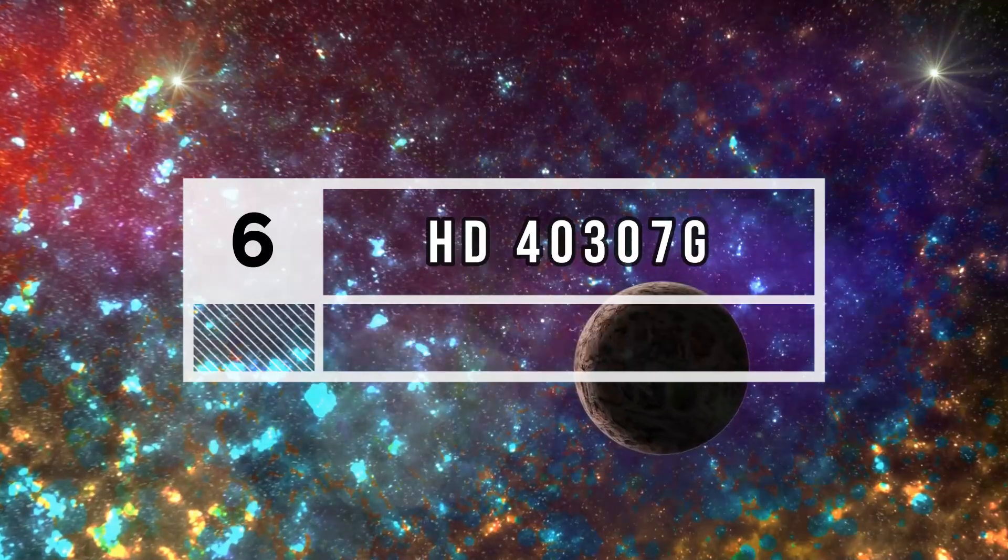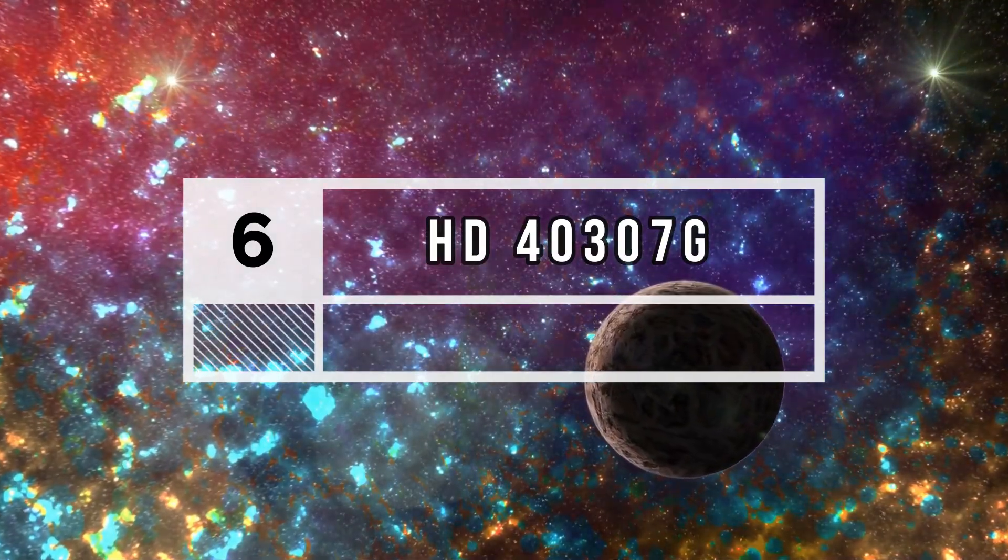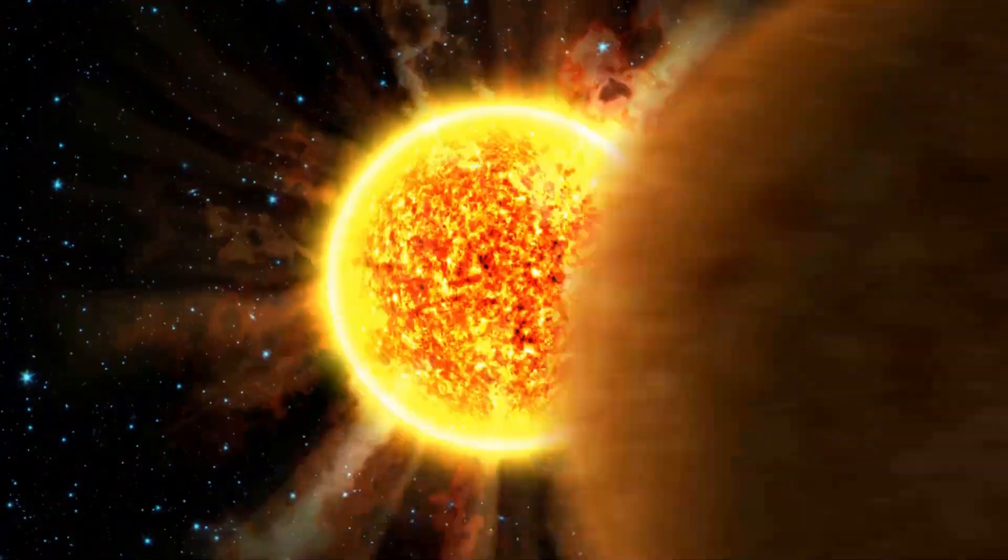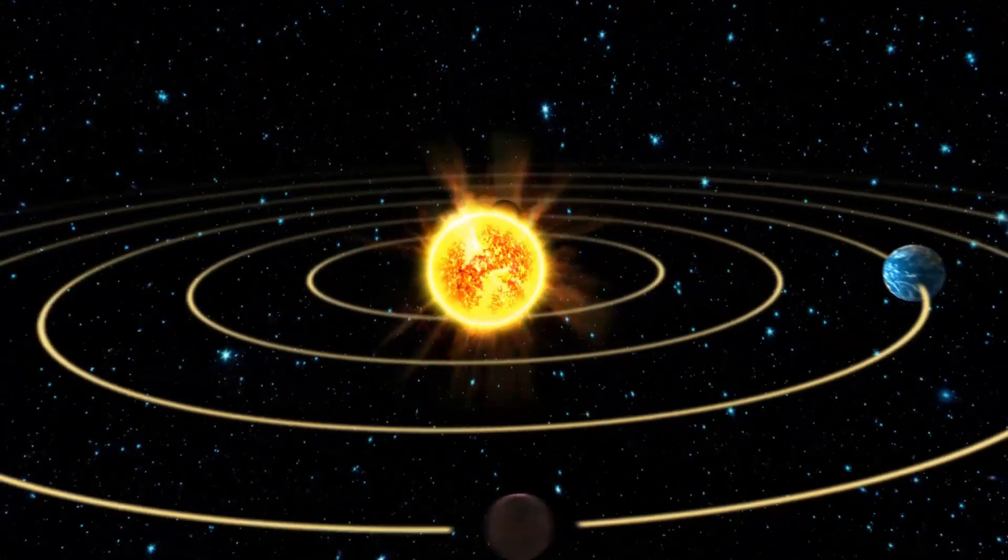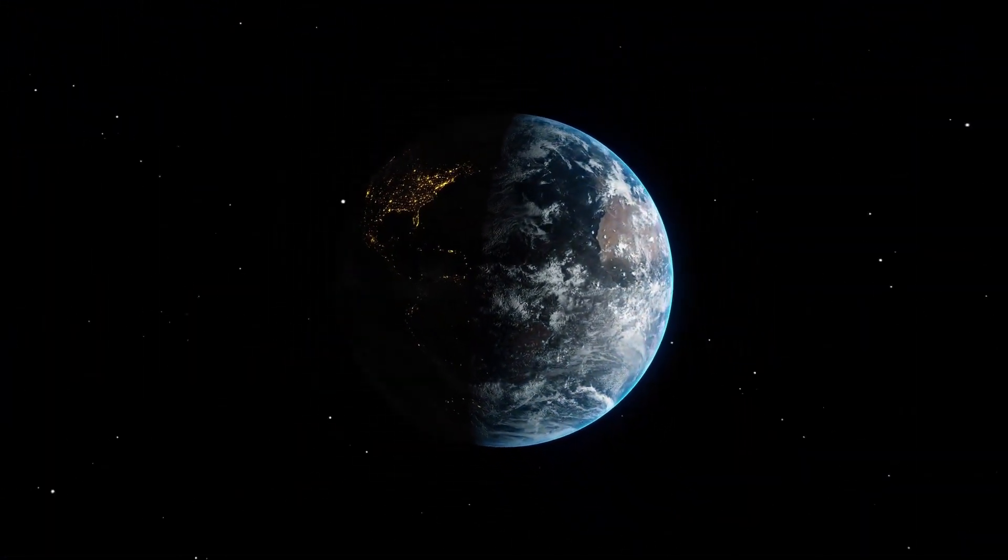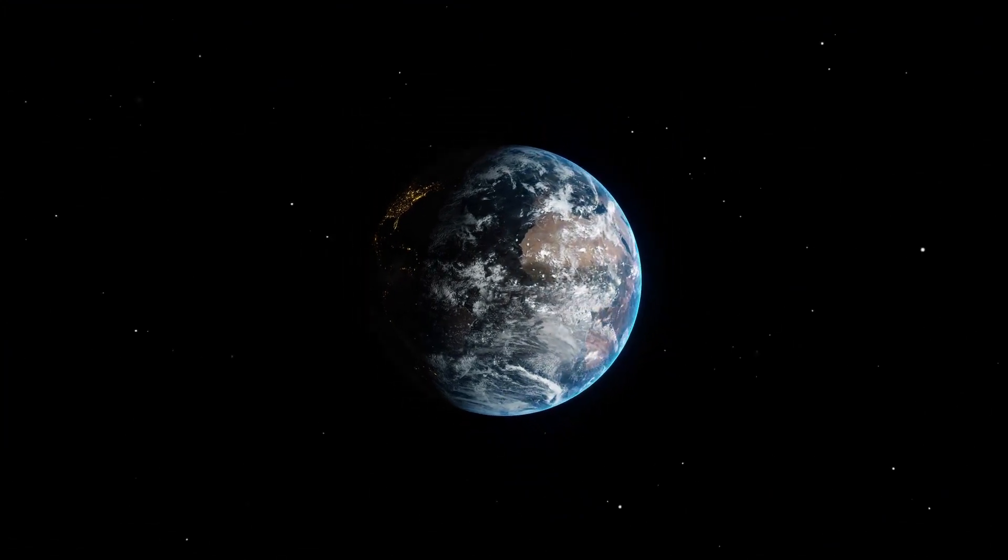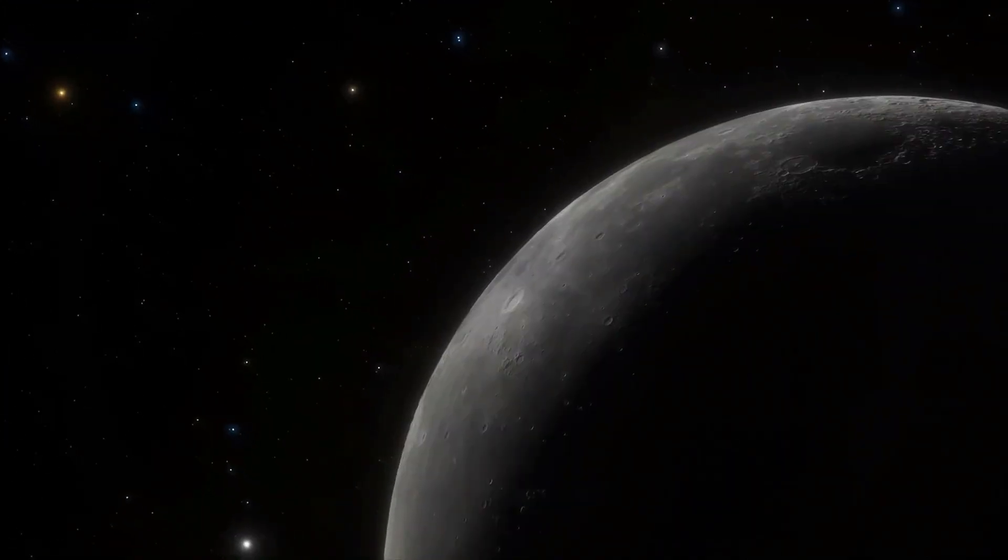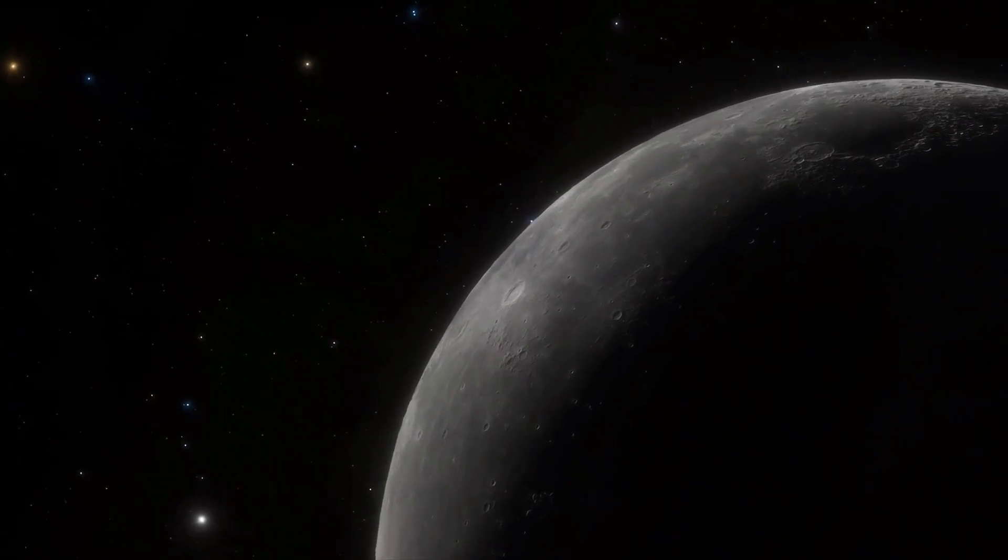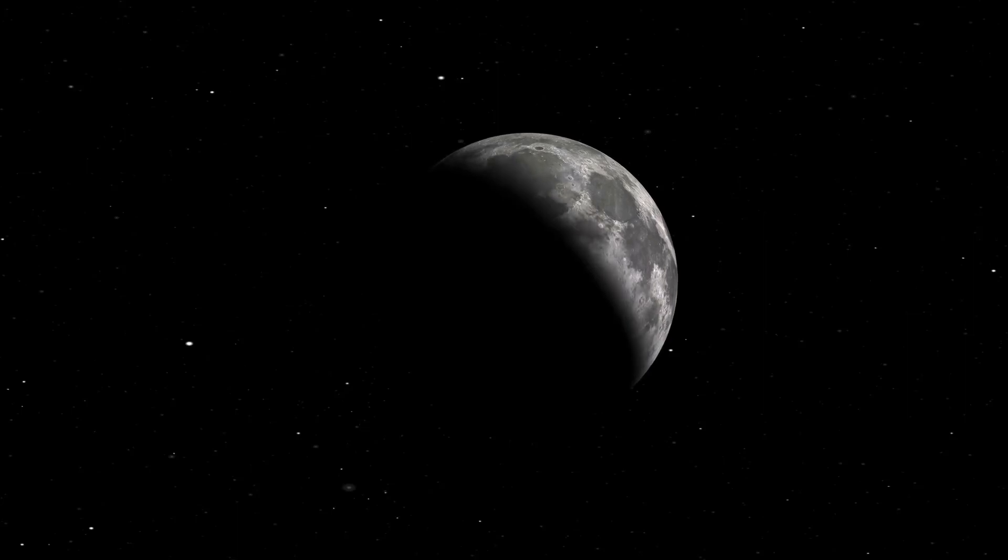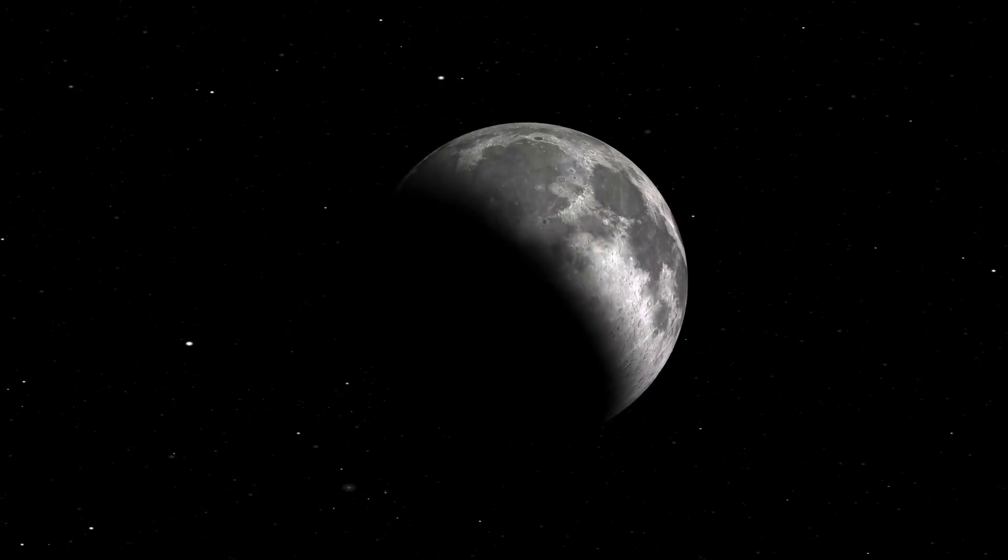Number 6: HD-40307g. This planet orbits around a dwarf orange star, HD-40307. HD-40307g is also known as the Super Earth because it is 7 times larger than the Earth. Its year consists of 197.8 days. This planet also has a day-night cycle, which is an important factor when it comes to sustaining life.